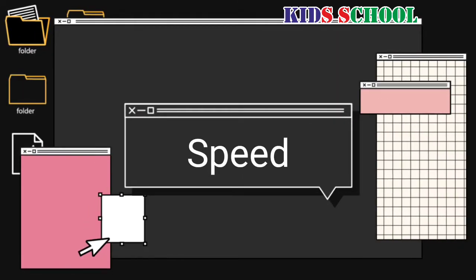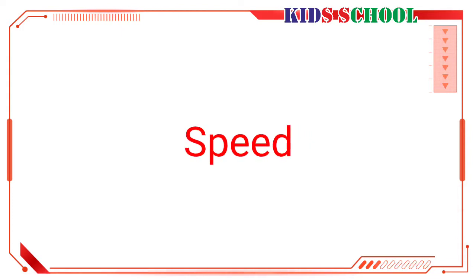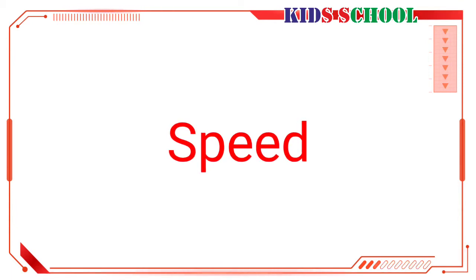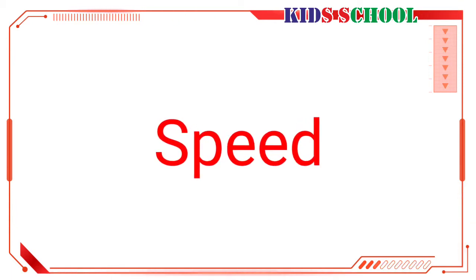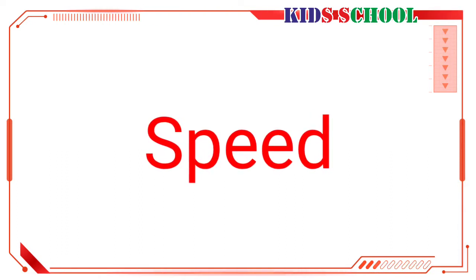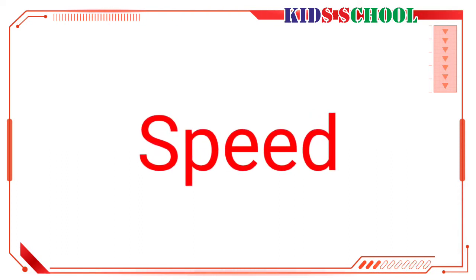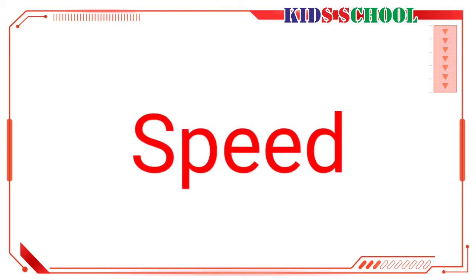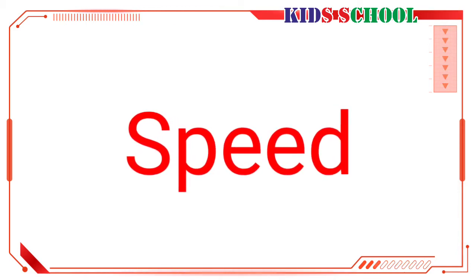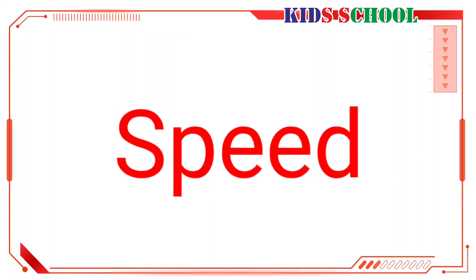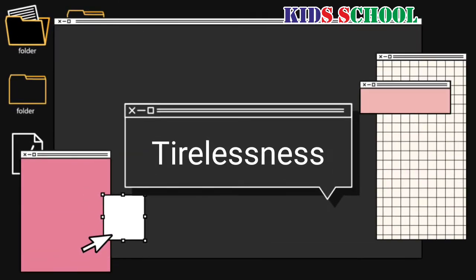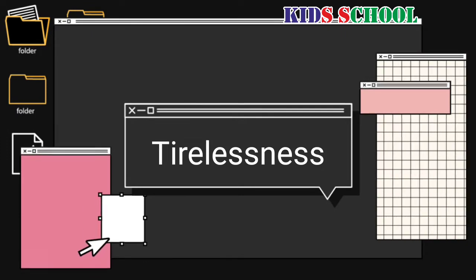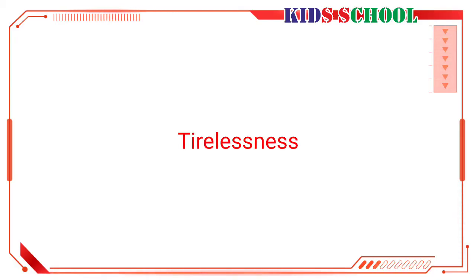The first feature of a computer is speed. A computer has a fantastic speed of performing any task; it can perform even the most complex calculations very quickly and accurately. For example, if you are asked to multiply 125 by 7, you will need a few minutes to give the answer and that answer could even be wrong, but a computer will give you the correct answer in a few seconds.